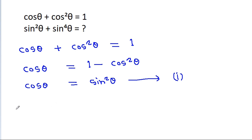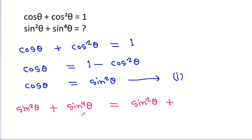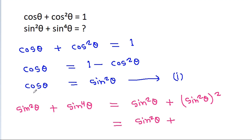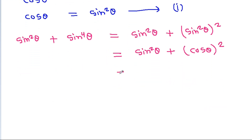We have to find the value of sin²θ + sin⁴θ. This can be written as sin²θ + (sin²θ)². From equation 1, sin²θ = cos θ, so (sin²θ)² = cos²θ. Therefore, the expression becomes sin²θ + cos²θ, which equals 1.